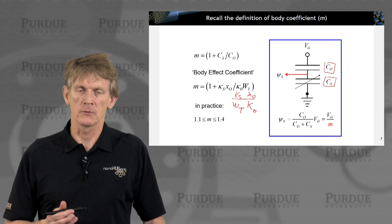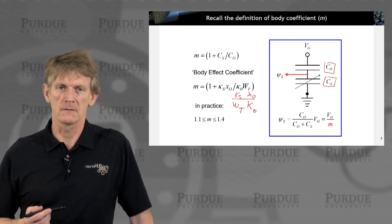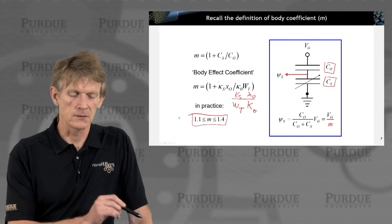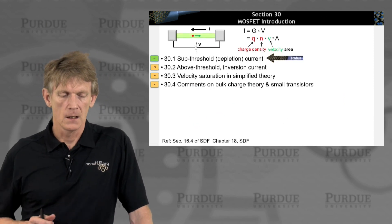So, you have two series capacitors, and the ratio between these coefficients can vary as a function of gate voltage. It is convenient to define this term, and we'll see that later.